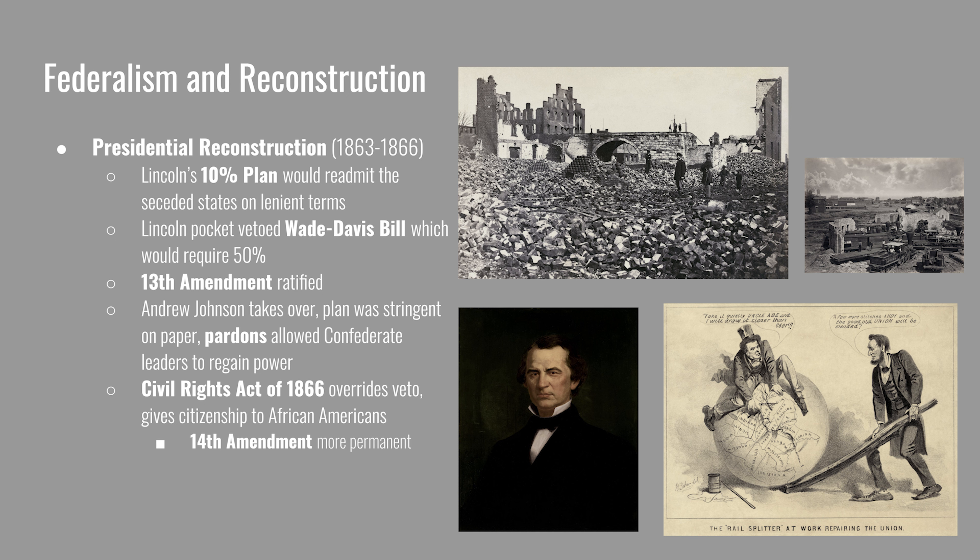The 14th Amendment guaranteed equal protection and due process under the law for all persons born in the U.S. or naturalized. The 15th Amendment guaranteed voting rights to citizens, but the wording is important — it only protects against discrimination based on race, color, or previous condition of servitude. It does not include sex or gender in its protections.